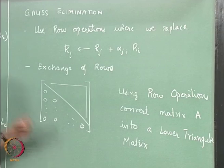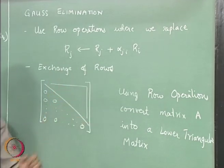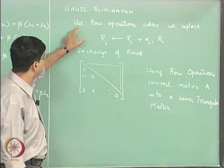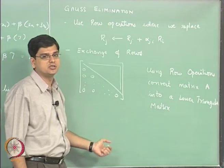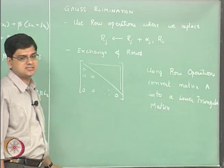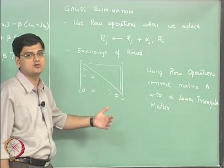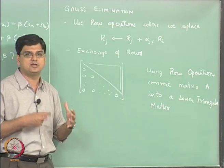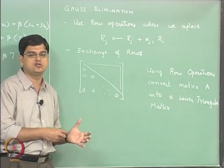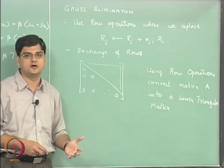And the same row operations have to be implemented on the vector B as well. So this is what we will do for doing the Gauss elimination. Let us look at another example, a three dimensional example, and then we will extend it to an n dimensional system. I am taking the three dimensional example and I will use it to explain both Gauss elimination as well as another method called the LU decomposition method.